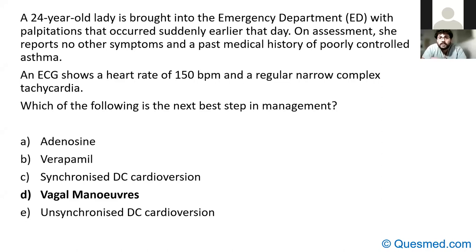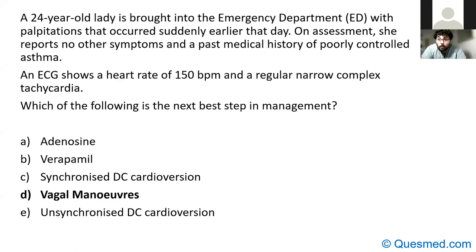Notice no blood pressure was given — that's deliberate. For those who thought DC cardioversion: if the blood pressure was 60/40, then the first-line treatment would be cardioversion. But if they're normotensive — say 120/80 — then you would want to try vagal manoeuvres first.